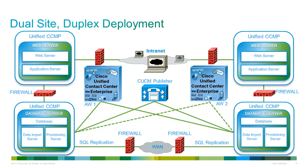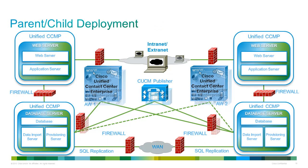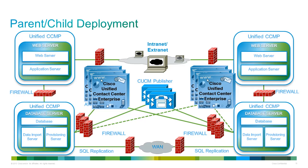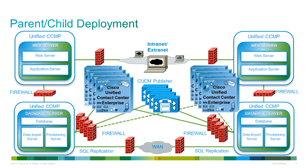With the dual site duplex deployment, the system increases internal resiliency by separating the web server from the database server. This is the most redundant deployment available and, as with the single site simplex deployment, supports a maximum of 8000 concurrent Unified CCE agents. In parent-child deployments, a single dual-sided duplex Unified CCMP instance connects to each of the child Unified CCE administration and data servers, which must be configured as physically separate primary administration and data servers. Each child instance appears as a tenant within Unified CCMP.